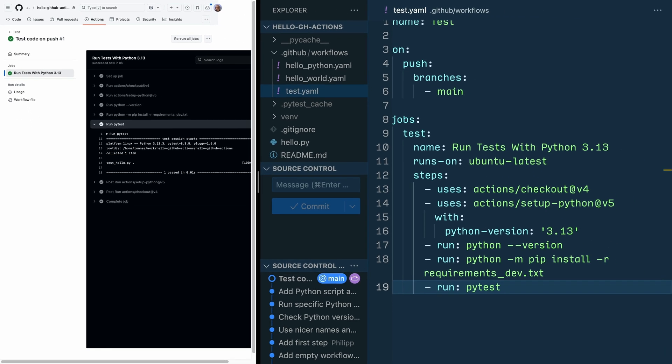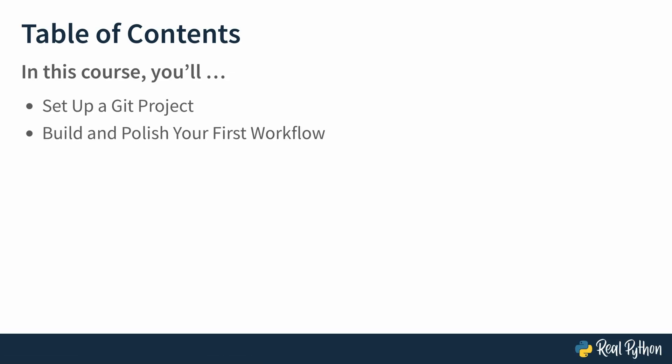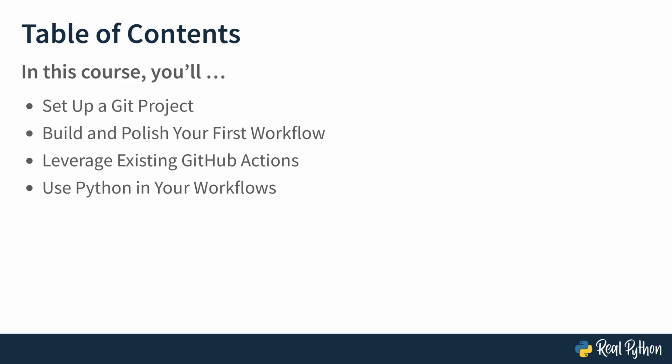What exactly are these steps? Well, that's what you will learn in this course. You will start by setting up a Git project and then build and polish your first workflow. You will leverage existing GitHub Actions that other people created, and then continue by using Python in your workflows and finally create an automatic testing pipeline with PyTest.